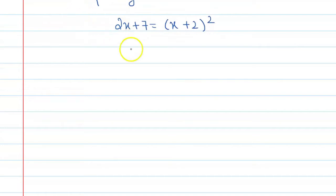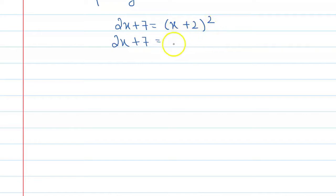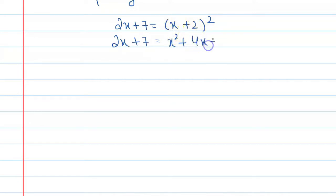This will become 2x plus 7 on the left side, which remains unchanged. On the right side, we apply the identity a plus b whole raise to power 2. This is x plus 2, and we can open it to get x square plus 4x plus 2 into x into 2. That is 4x plus 2 raise to power 2, that is 4.